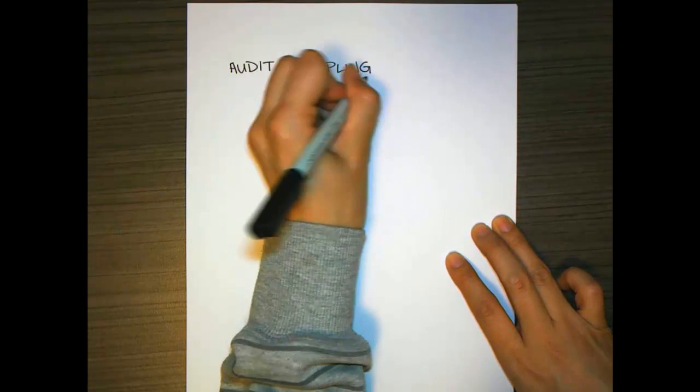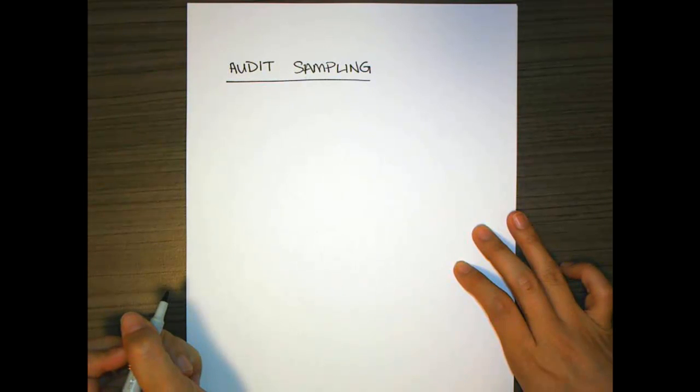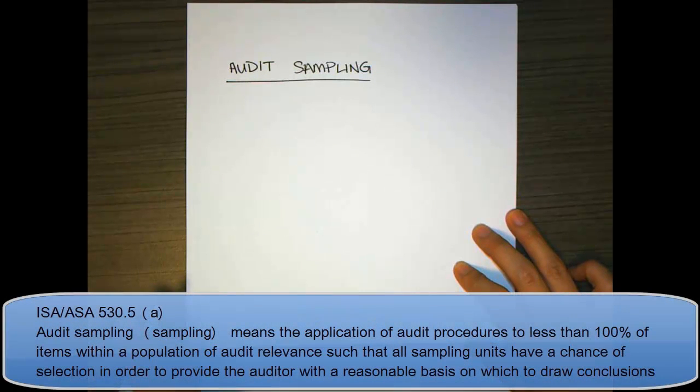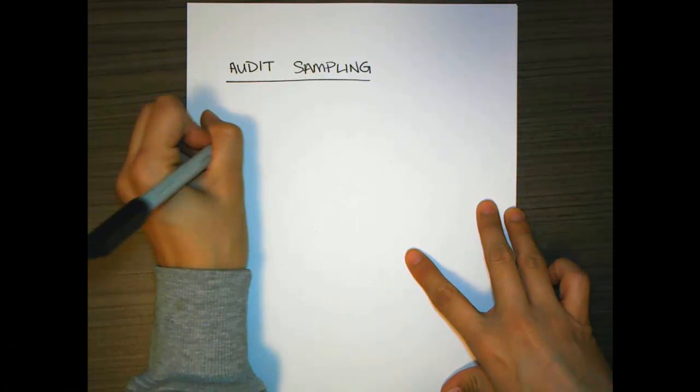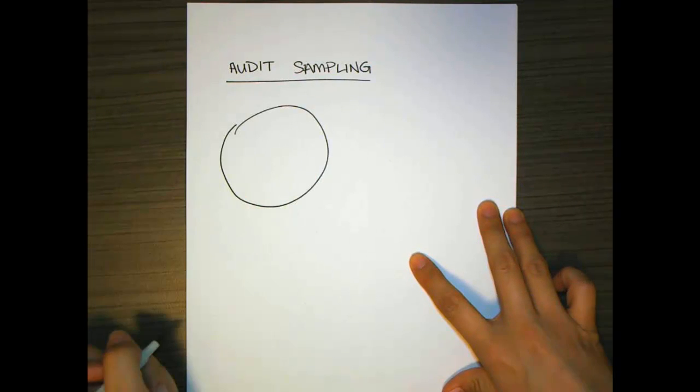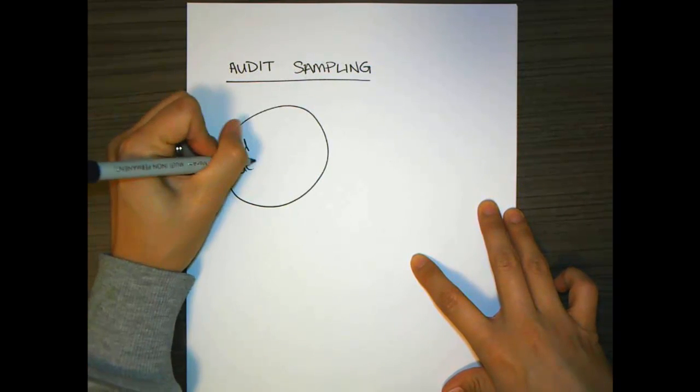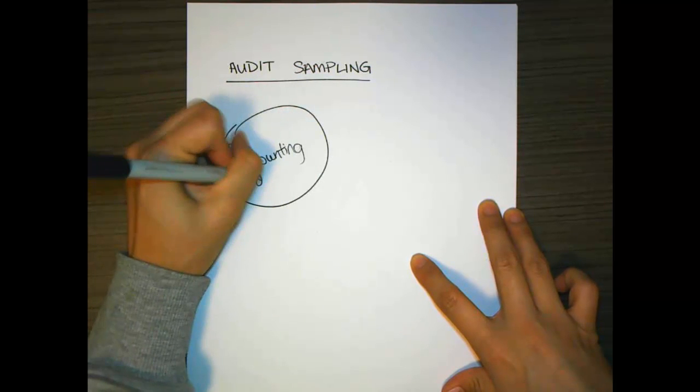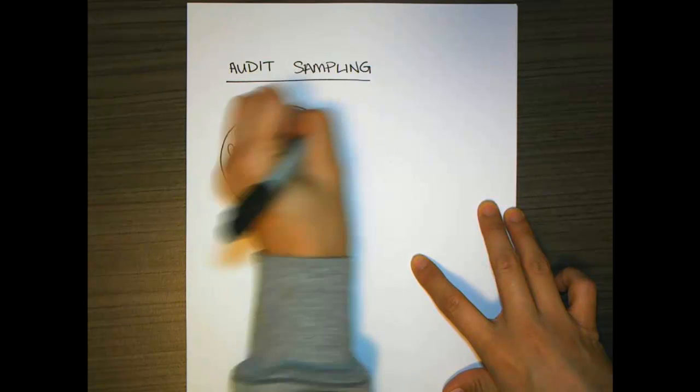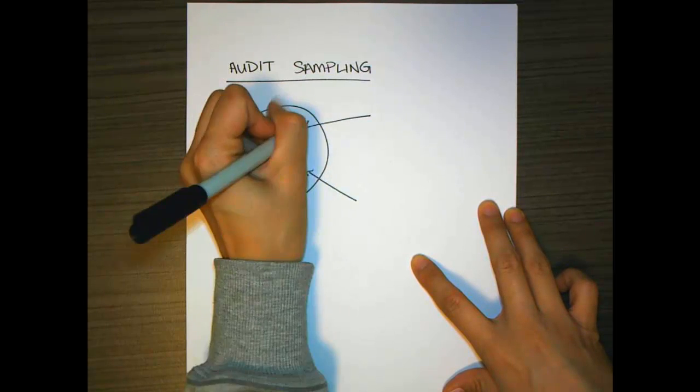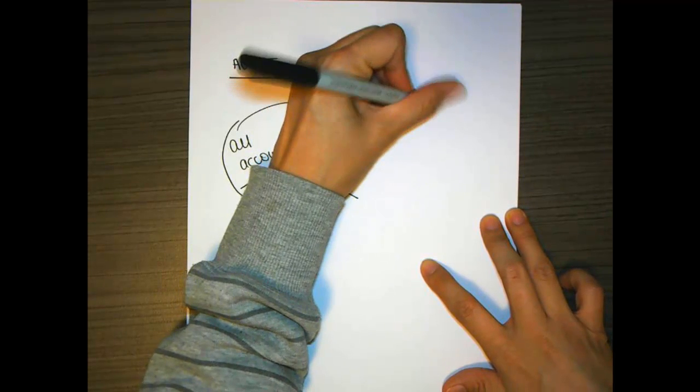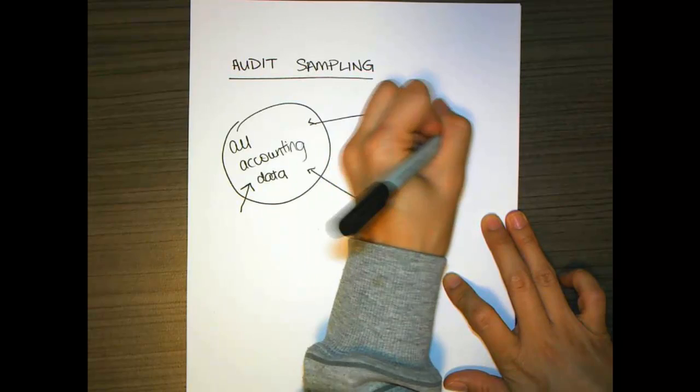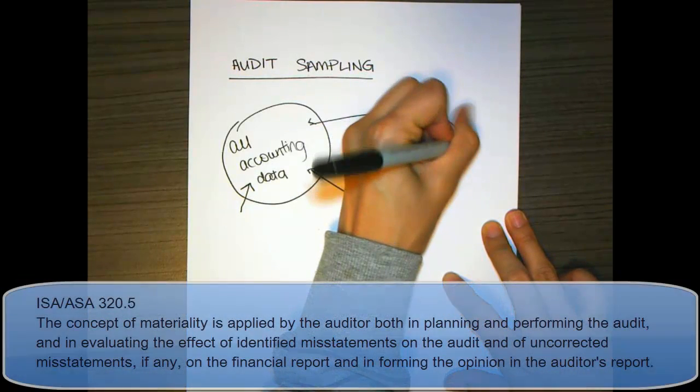Sampling means when we draw or make a conclusion not from evidence gathered on the entire set of accounting documents, but on a small sample. So if this is all our accounting data, we're selecting particular transactions to test and gather our audit evidence, and we're going to use that evidence to build a conclusion about whether the account is free from material misstatements.